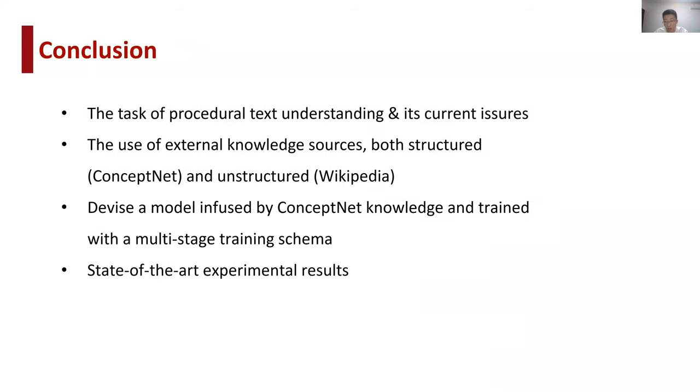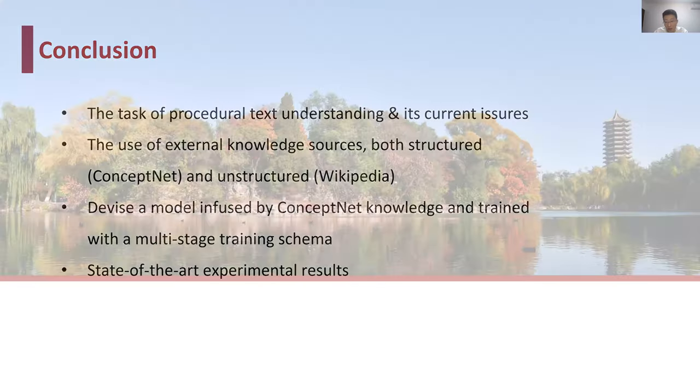So to conclude, we first take a brief look over the task of procedural text understanding and its current problems. Then we propose to utilize multiple forms of external knowledge, both structured and unstructured, to solve the issue of common sense reasoning and data enrichment. We inject ConceptNet knowledge triples into our end-to-end model, while using Wikipedia paragraphs to fine-tune our BERT encoders. The model finally reaches new state-of-the-art results in multiple datasets. Thank you very much for your attention.